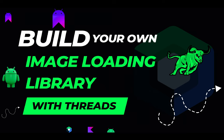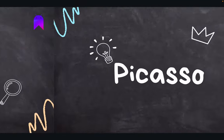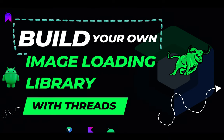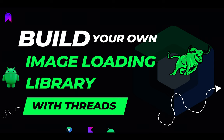Hello everyone, welcome to Native Mobile Beds. In today's video we are going to create our own image loading library. There are so many popular third-party libraries to load images into our Android application — few of them are like Glide, Picasso, Coil and so many others — but in this video we are going to learn how we can create our own image loading library for Android.